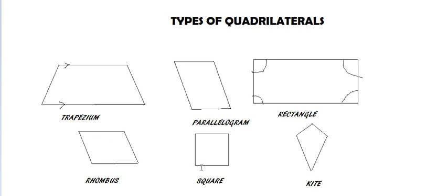Next is a square. A square can also be called a parallelogram, a rectangle, or a rhombus. Its special property is that all angles are equal to 90 degrees and all its sides are equal. It's a parallelogram because both pairs of opposite sides are parallel and equal. It's a rectangle because all angles are 90 degrees. And like a rhombus, all sides are equal. In fact, parallelogram, rectangle, rhombus, and square are all special cases of a trapezium, because in all of them at least one pair of opposite sides is parallel.